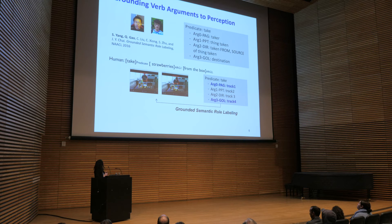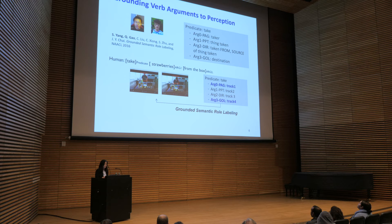The first problem we looked at is the grounding of verb arguments to perception. We know verb semantics can be captured by frames, which specify key ingredients — the semantic roles that allow understanding of a situation. For example, 'take' has taker, thing taken, thing taken from, and thing taken to. If we want robots to follow instructions, the robot will first have to identify these roles from running text, and also ground these roles to the physical environment.